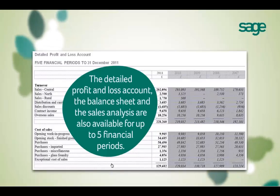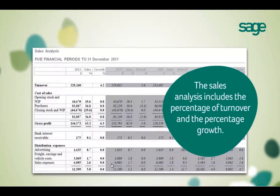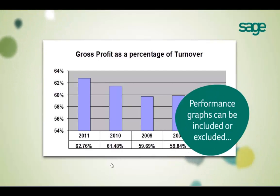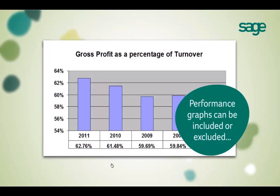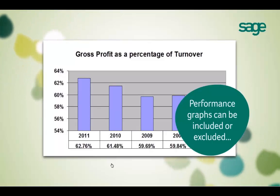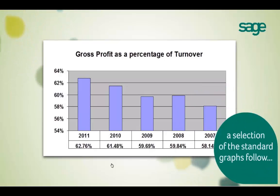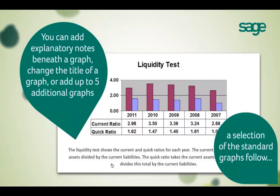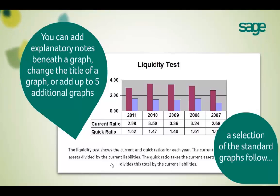The MIP provides a very detailed P&L, balance sheet and sales analysis for five years of information in the Accounts Production software. The sales analysis also includes an automatic calculation of the percentage of turnover and the percentage growth, making it easier to provide business advice. You can select whether or not to include the graphs in the MIP report. Here's just a selection of the tables that can automatically be populated. It's easy to change graph titles and add explanatory notes, and you also have the ability to set up five additional graphs of your choosing.